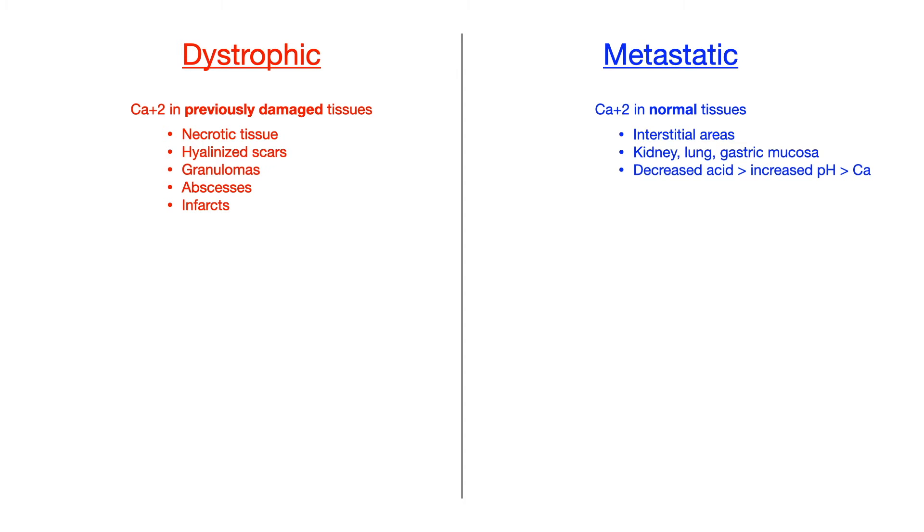So with dystrophic calcification, we get calcium deposition in previously damaged tissues, whereas in metastatic calcification, we get calcium deposition in otherwise normal tissues.